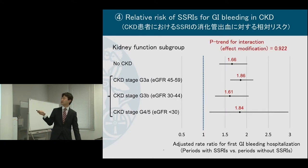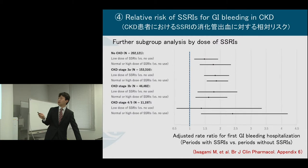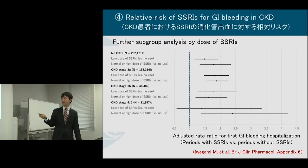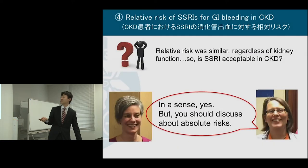I further divided them into low dose and high dose, expecting that doctors might prescribe a low dose of SSRI for patients with lower kidney function — a kind of confounding — so I stratified accordingly. But the results were very difficult to interpret because of large confidence intervals, as each group became very small. In the end, it seemed that the relative risk was not very different — a kind of boring result.